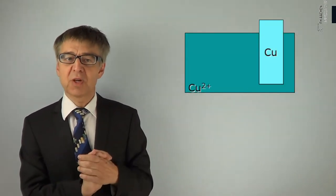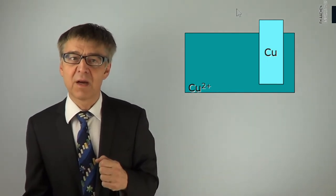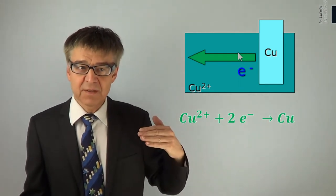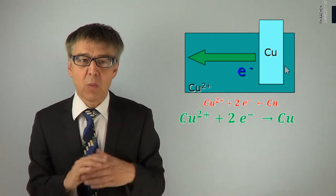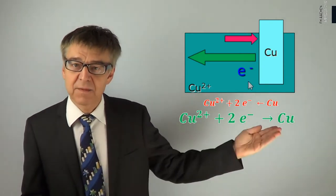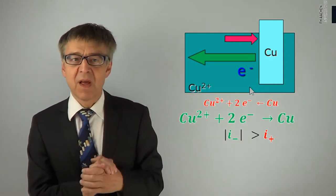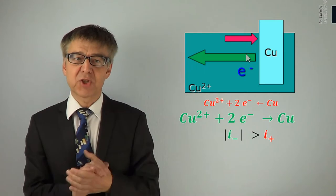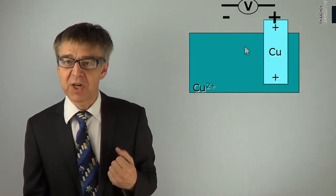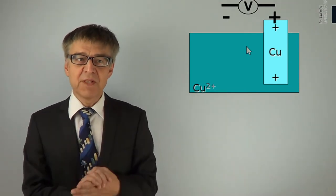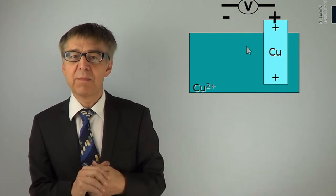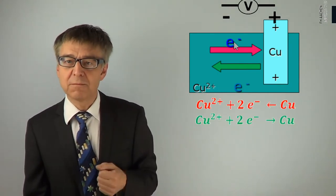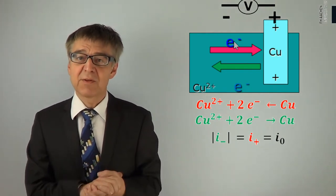If we immerse a copper sheet into a copper chloride solution, two processes occur. Copper ions deposit as copper metal, producing an electron flow, while copper metal dissolves into ions as electrons flow into the metal. Because copper is a noble metal, the cathodic current initially outweighs the anodic current. Thus copper gets charged positively, while the electrolyte gets a negative charge. The cathodic current will be slowed down by the resulting electric field, and the anodic current will be accelerated. Eventually, in equilibrium, dissolution rate and deposition rate are equal, resulting in a potential jump at the metal–electrolyte surface.